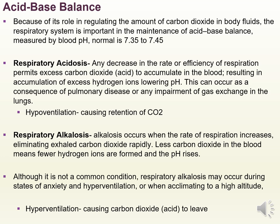Because of its role in regulating the amount of carbon dioxide or acids in the body, the respiratory system is important in maintenance of acid-base balance, measured by pH — normal is 7.35 to 7.45. When you think respiratory acidosis, think hypoventilation — any decrease in the rate or efficiency of respirations that allows excessive carbon dioxide or acids to accumulate in the blood, lowering the pH. This can occur as a consequence of things like pneumonia.